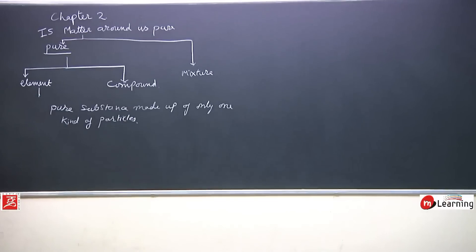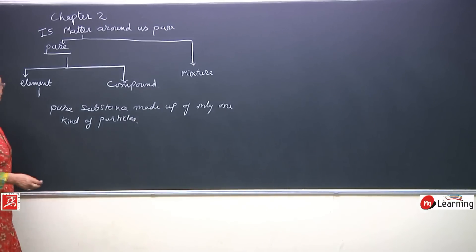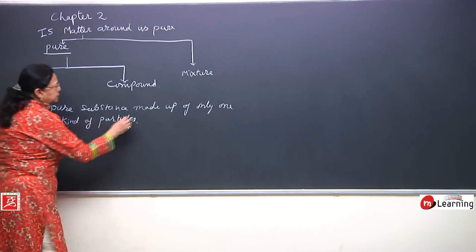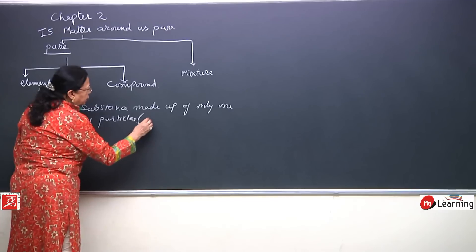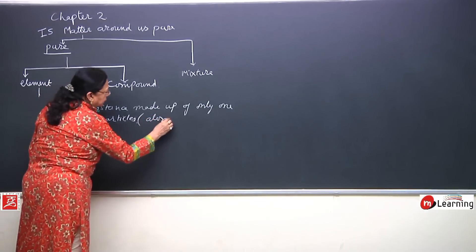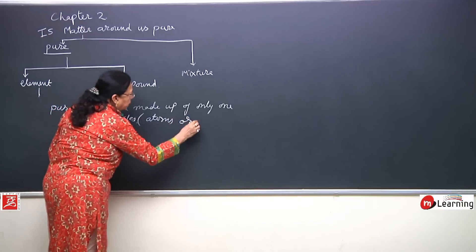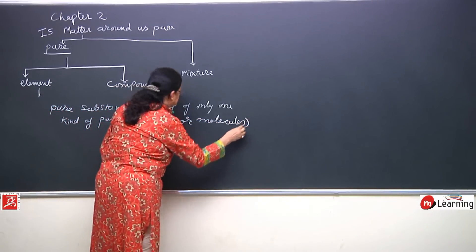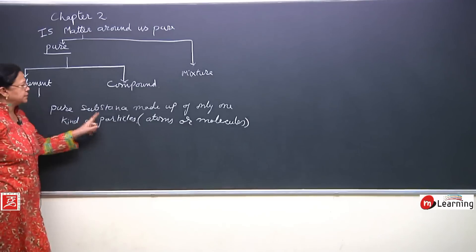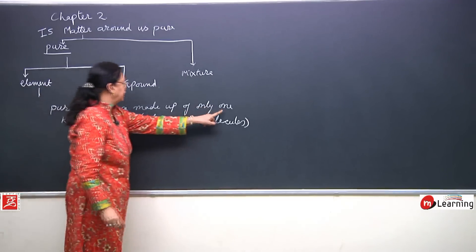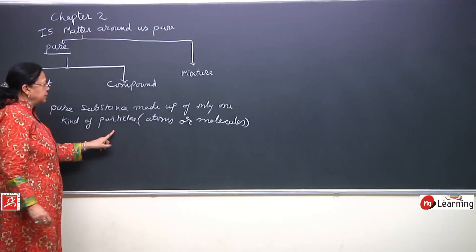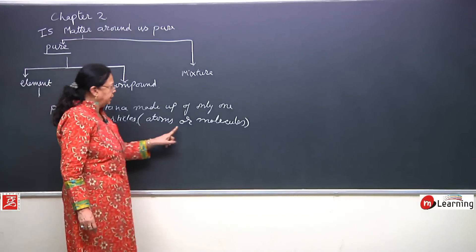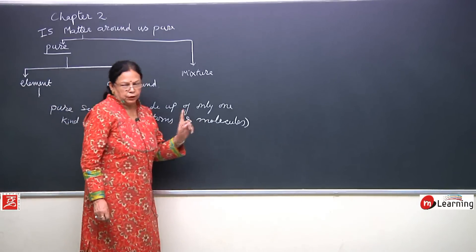A pure substance contains only one kind of atoms or molecules. Pure substances are made up of only one kind of particles, and these particles can be atoms or molecules.